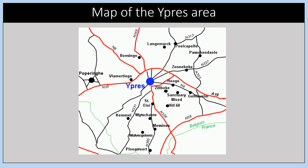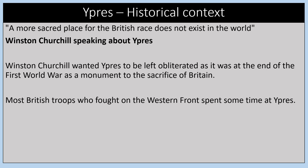Here is a map of the Ypres area in more detail, showing some of the different places we'll be visiting, such as Poperinghe, Langemark, Passchendaele, Hooge, Sanctuary Wood, and Hill 60. These are some of the different places we'll be going to, with Ypres itself being really, really important.